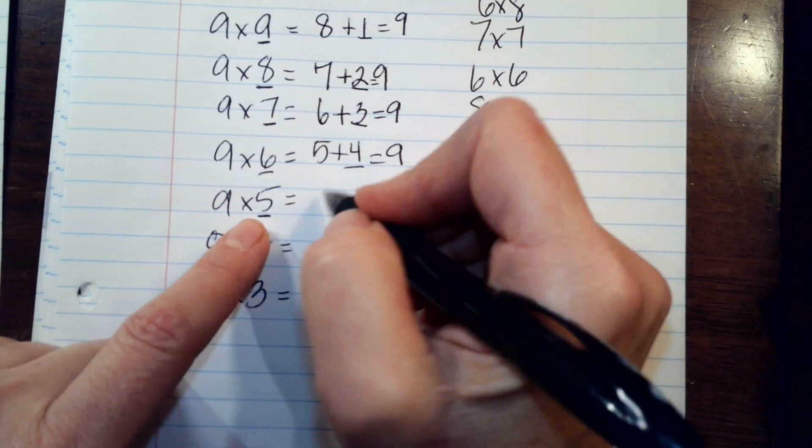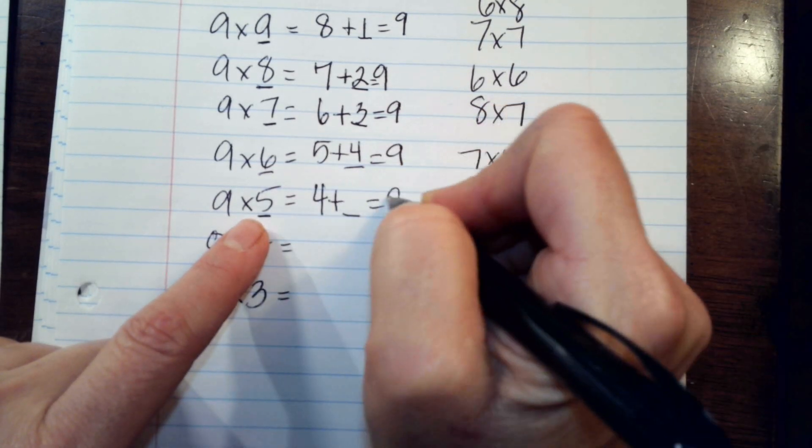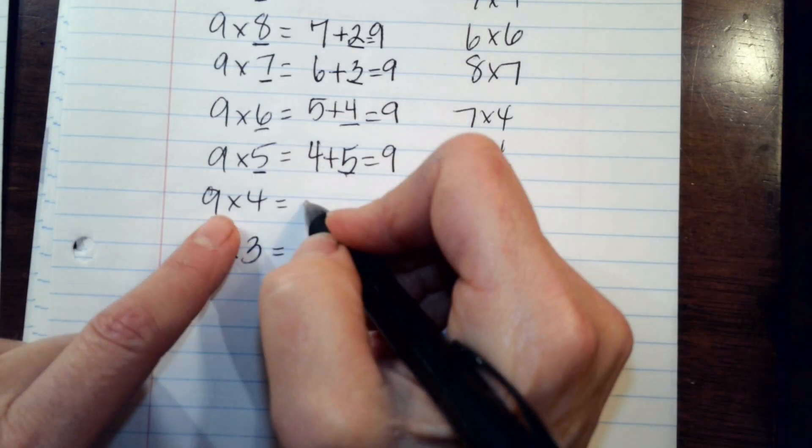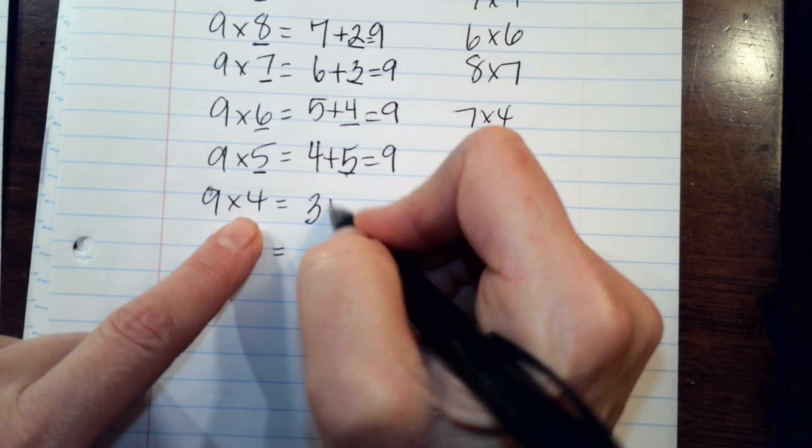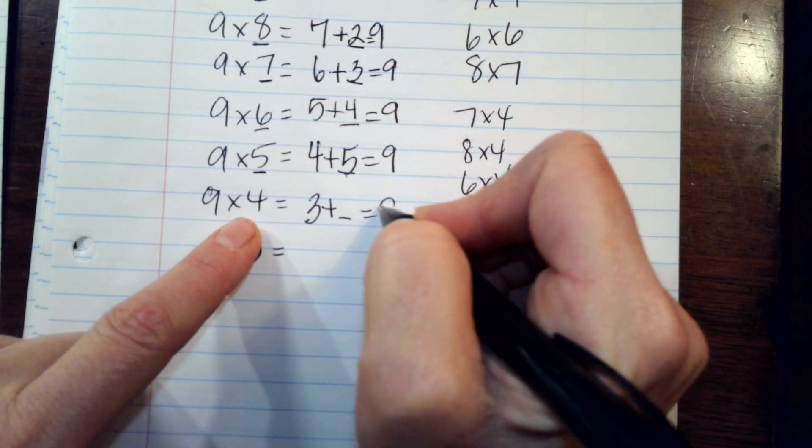Nine times five, four, plus something equals nine, five. One less than four is three, three plus something equals nine, thirty-six.